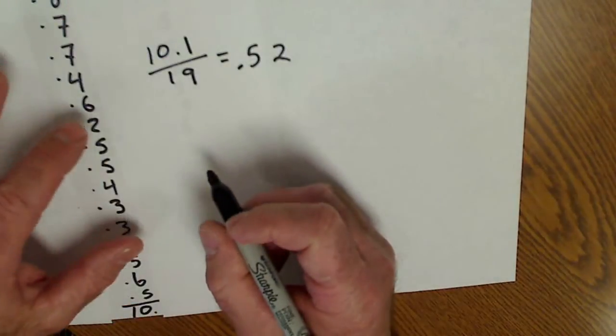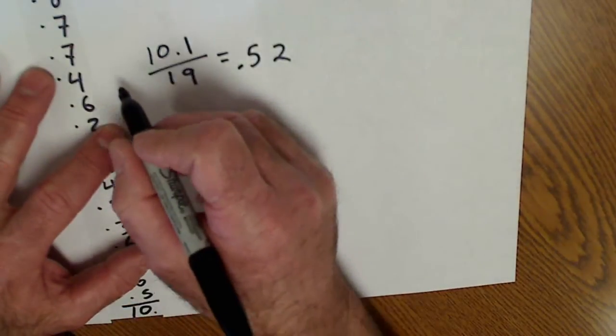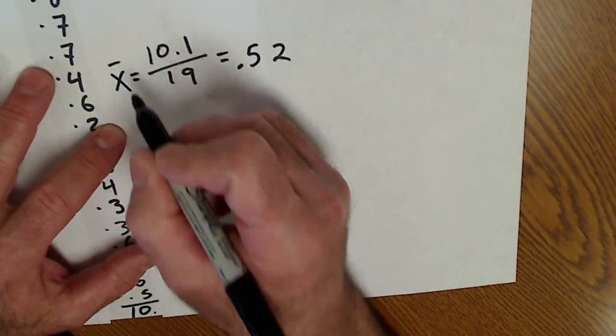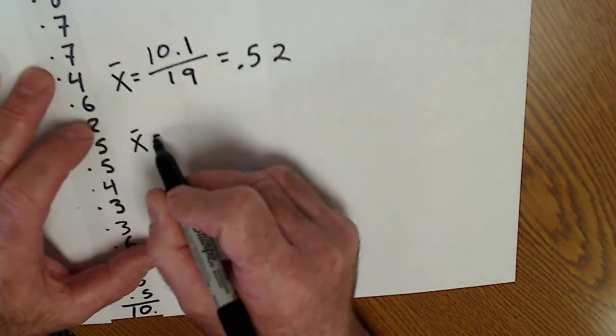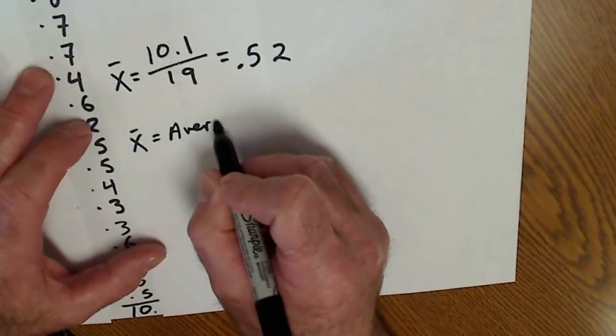So on average, it's 0.52. The notation for average is X bar. X bar, all that means is average or mean.